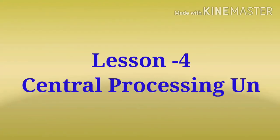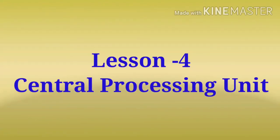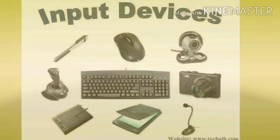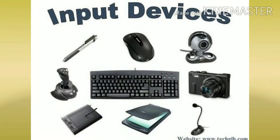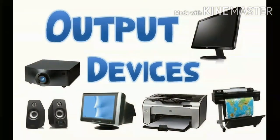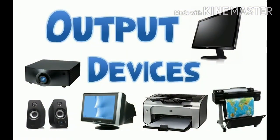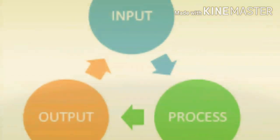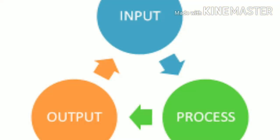Good morning children. In computer, the 4th chapter is Central Processing Unit, i.e. CPU. We learned about different input devices and output devices to send and receive different types of data. In this chapter, we focus on the processing part of the IPO cycle.